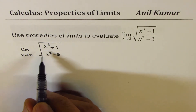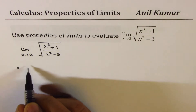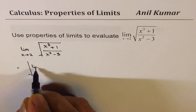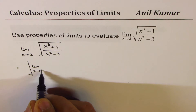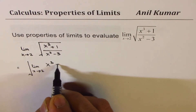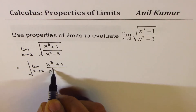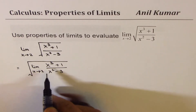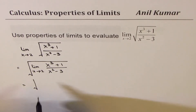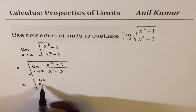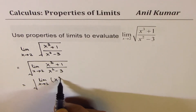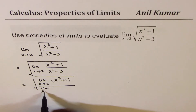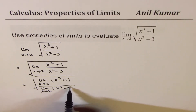In this particular function, what we can do is write this limit within the radical sign. As per the properties of limits, we can write it as the limit x approaches 2 for x cubed plus 1 over x squared minus 3. Then for numerator and denominator we use: limit x approaches 2 for x cubed plus 1 over limit x approaches 2 for x squared minus 3.